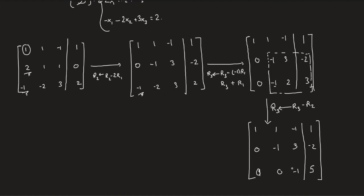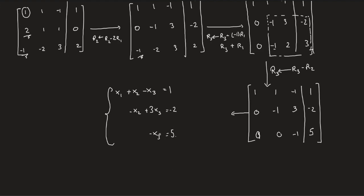So now we could do back substitution to solve for x_1, x_2, x_3, or to be more correct, x_3, then x_2, then x_1. If you want, you could rewrite the system, but this is unnecessary, just for you to see what's going on. So the system corresponding to the upper triangular form is the following: x_1 plus x_2 minus x_3 is one, then you have a minus x_2 plus 3x_3 is minus two, then minus x_3 is five, right? So from the last equation, we start from the last equation, we get that x_3 is minus five, we solve for x_3.